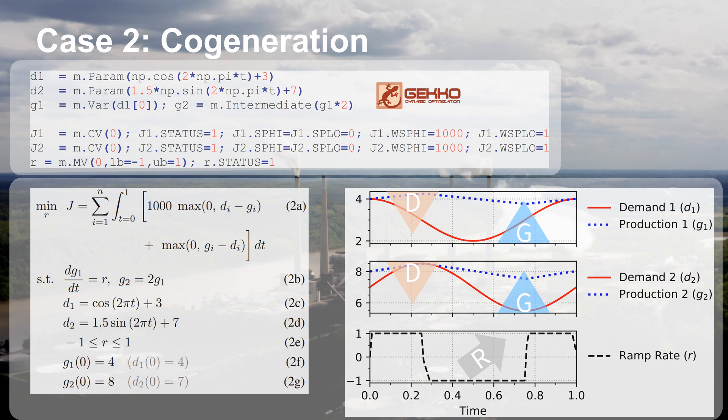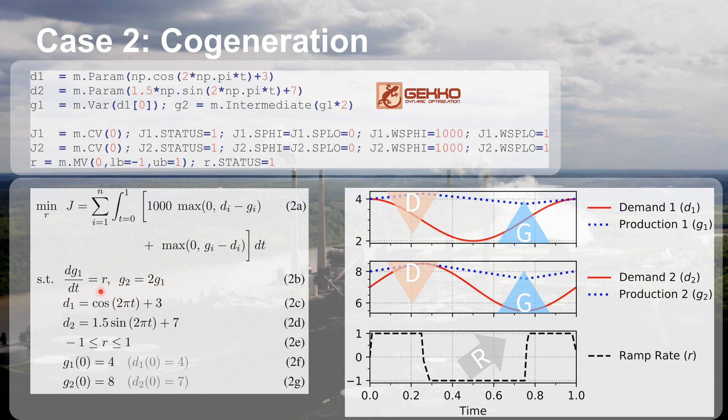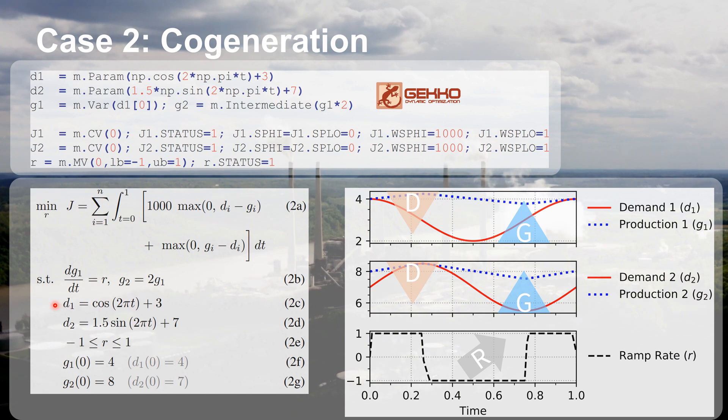So in this case, we have one producer that we can ramp up or down, but we're trying to produce two things, demand one and demand two. That might be electricity, and that might be heat. So there are two profiles here where you can see there's the first demand and second demand.